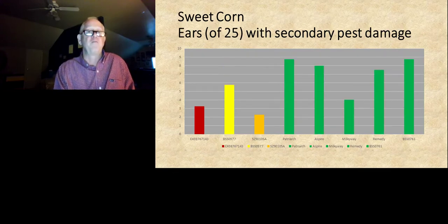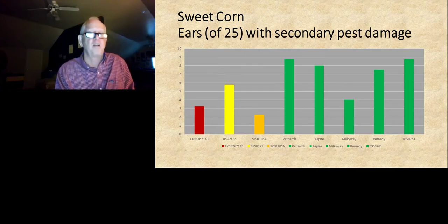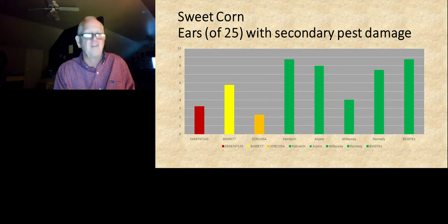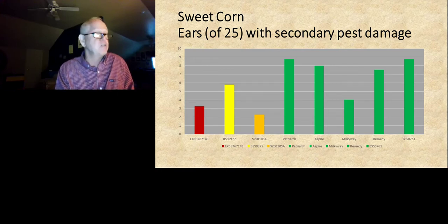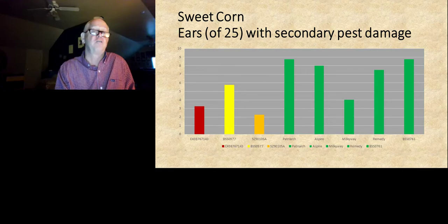One thing to remember if you do start growing BT sweet corn: particularly those Vip protein products will take care of the caterpillars, but you've still got to spray for secondary pests. This is mostly sap beetles, and in the fall you can get silk fly as well.